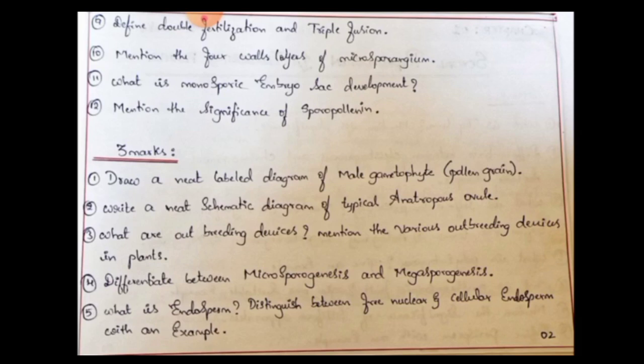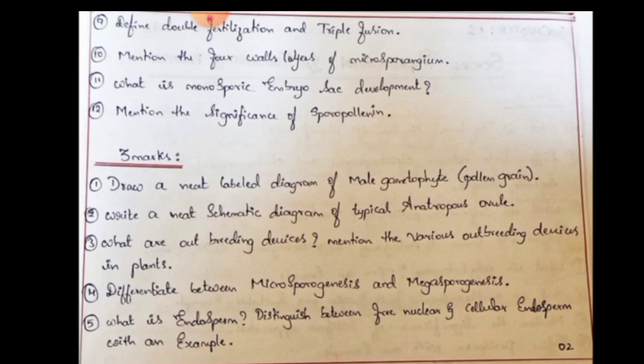What is the significance of sporopollenin? This is a repeated question. In the pollen grain diagram, there is an outer layer called the exine, made of sporopollenin, a hard chemical material. For the 3-mark question: draw a neat labelled diagram of the male gametophyte, which is the pollen grain diagram. This is a complete neat labelled diagram — you don't need to write an explanation for this question; just answer diagrammatically.